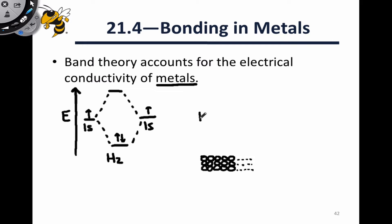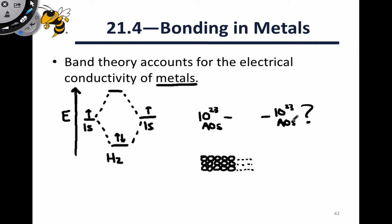This means we might have something like a mole — 10 to the 23rd — atomic orbitals on one side of the orbital energy diagram and another mole of atomic orbitals on the other side, raising the question of how to arrange the molecular orbitals based on this huge collection of atomic orbital inputs.